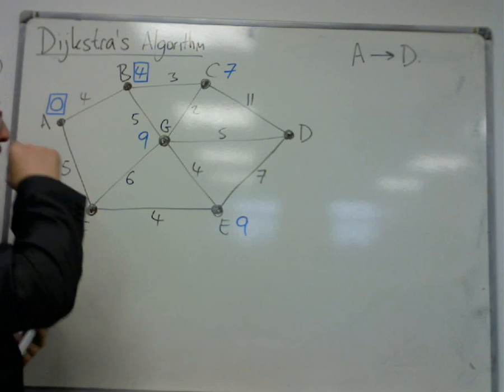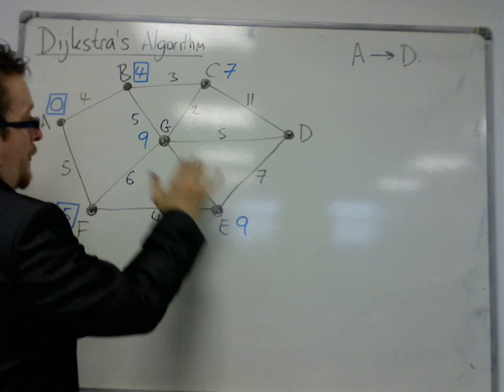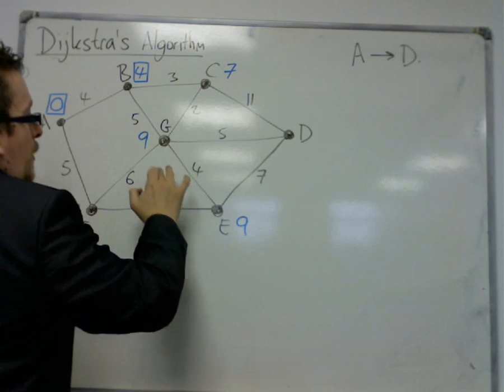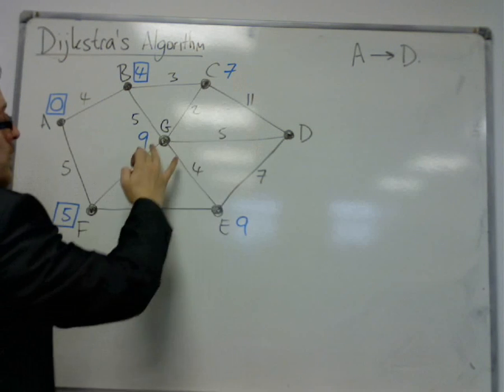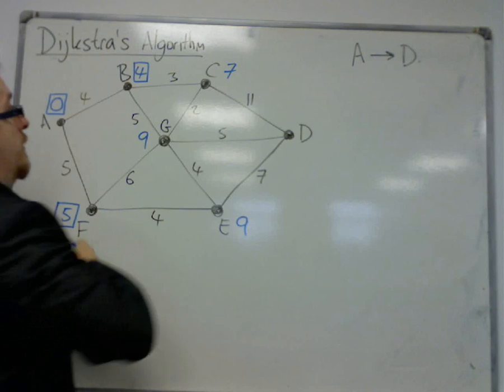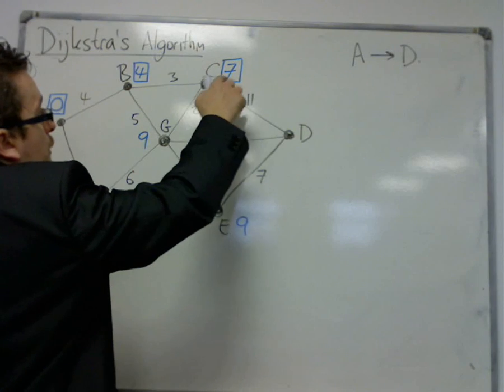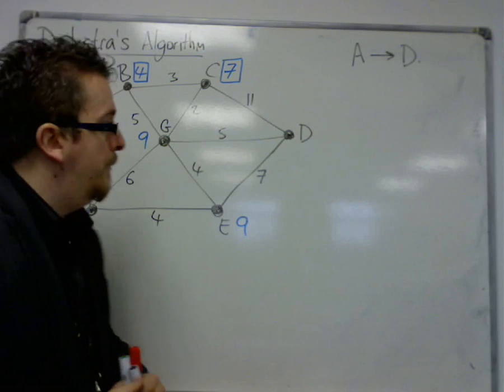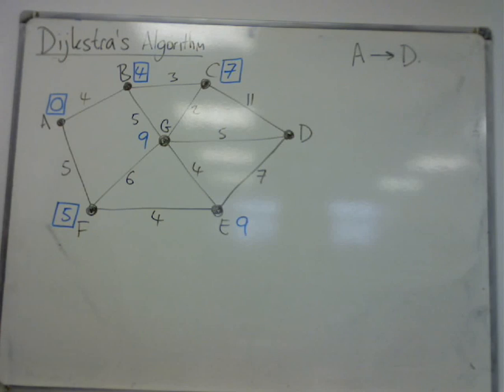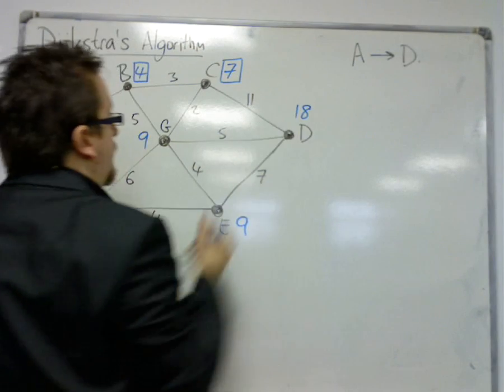Now I'm looking at the shortest one of each of the unboxed vertices, because I've exhausted all my routes out of F. So the shortest one of those is 7, so that's the one I pick. I could go to G, 7 and 2 would be 9, but that's still not better than 9 I already have, so I don't bother writing anything down. And 7 plus 11 is 18.